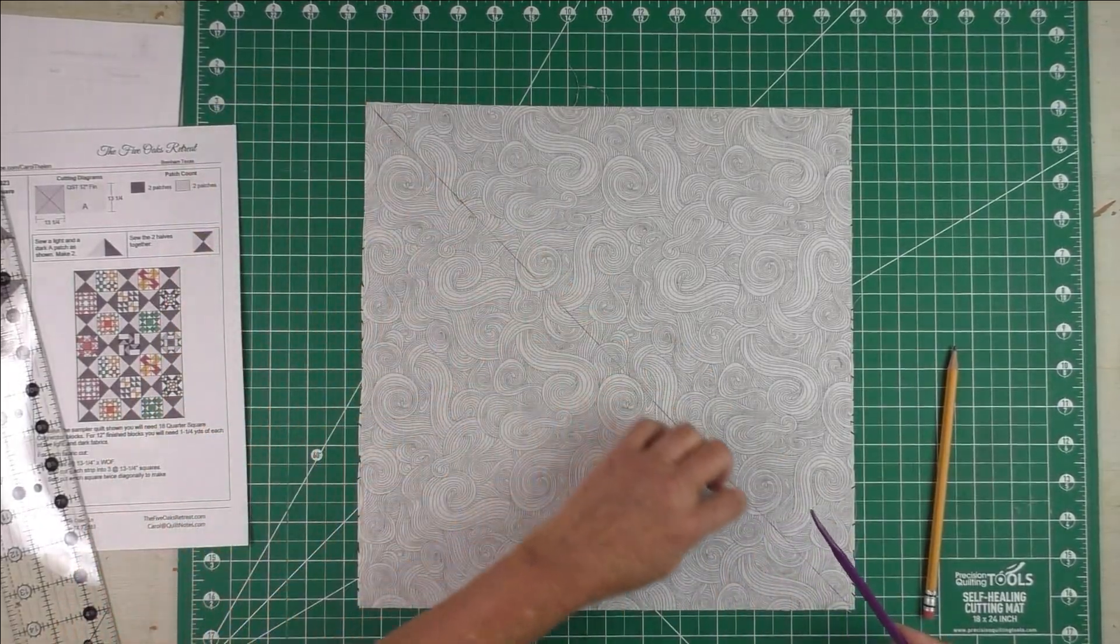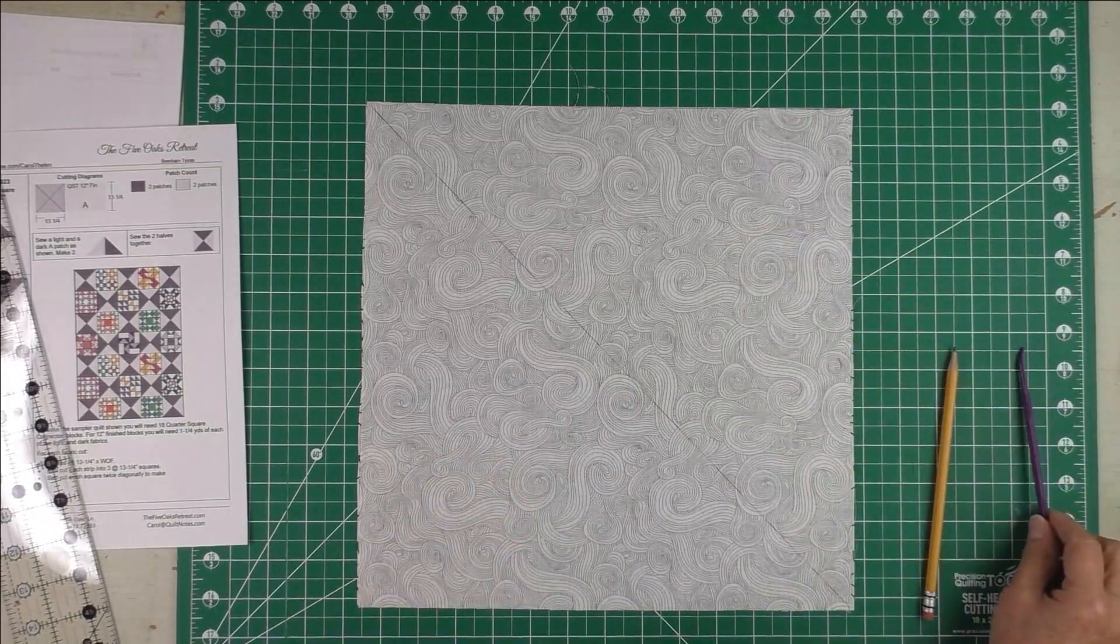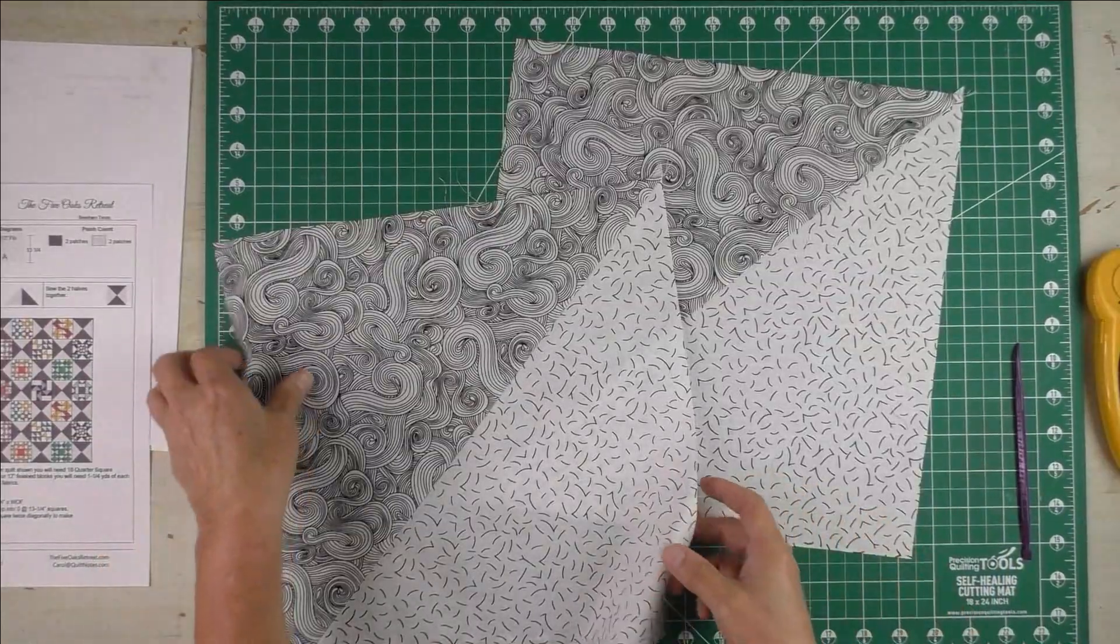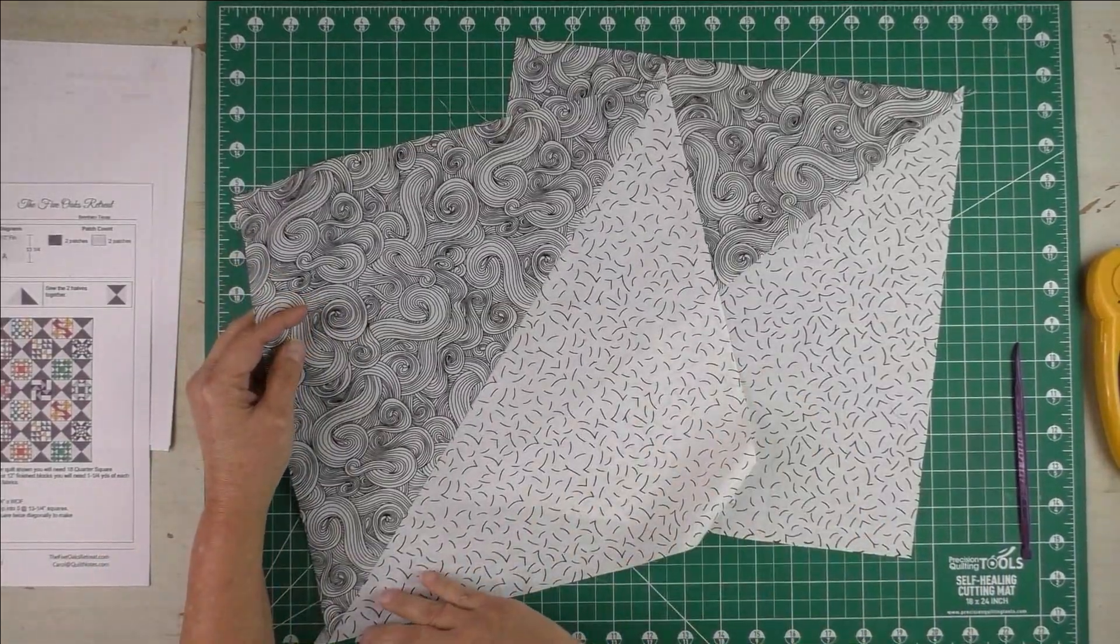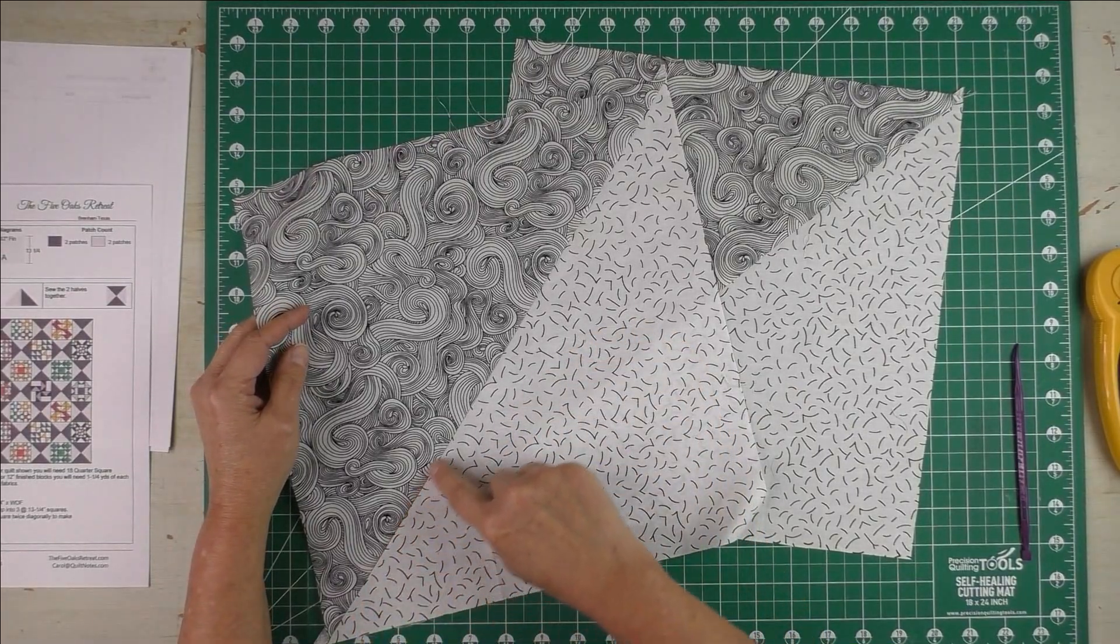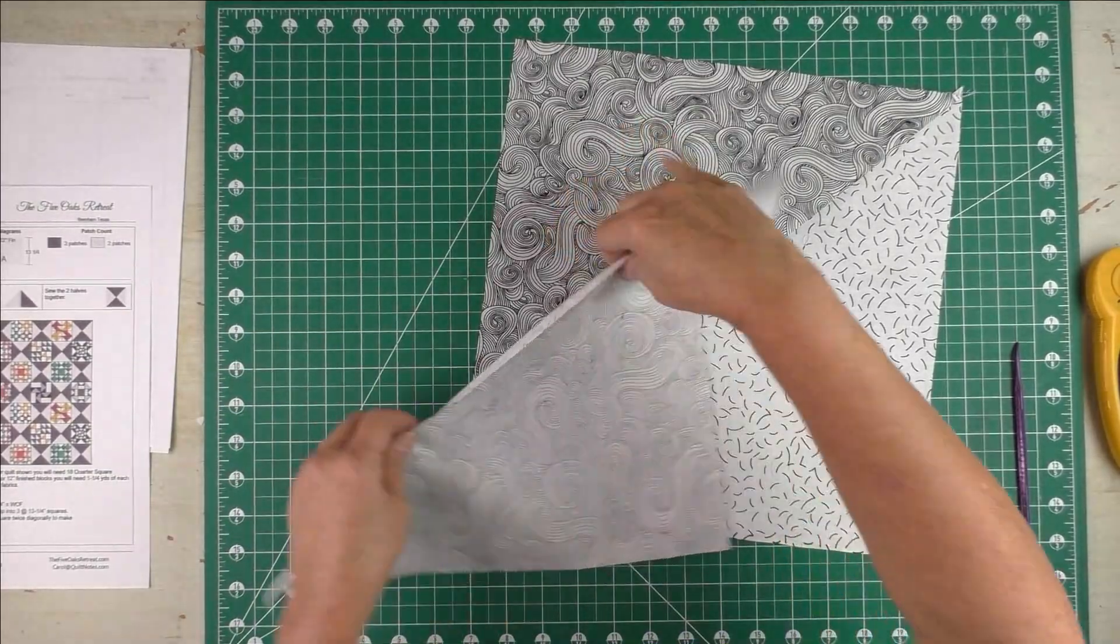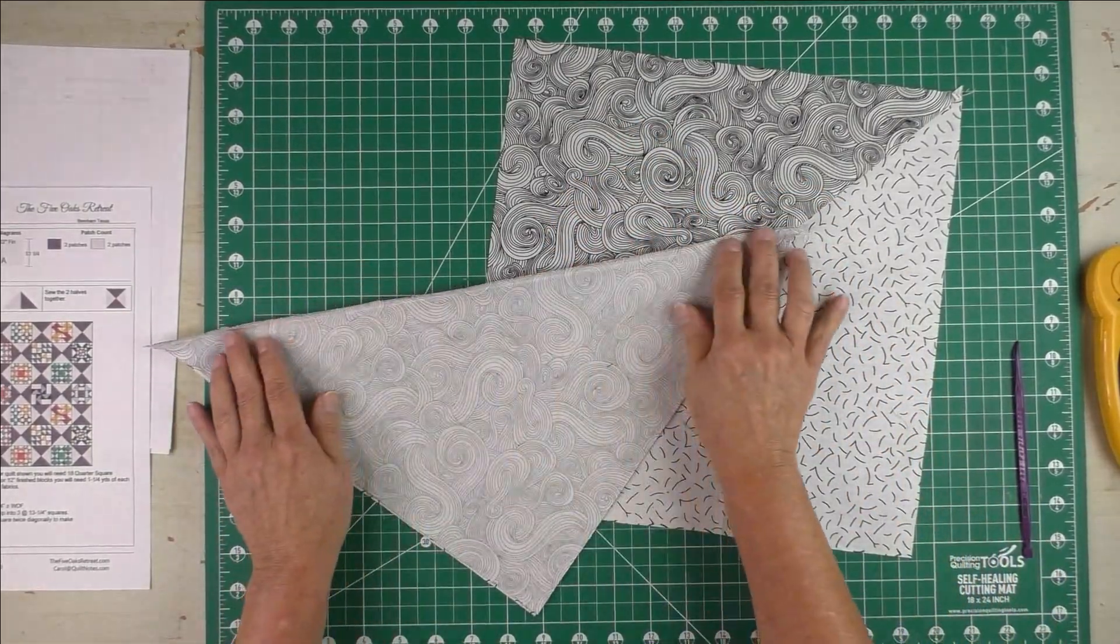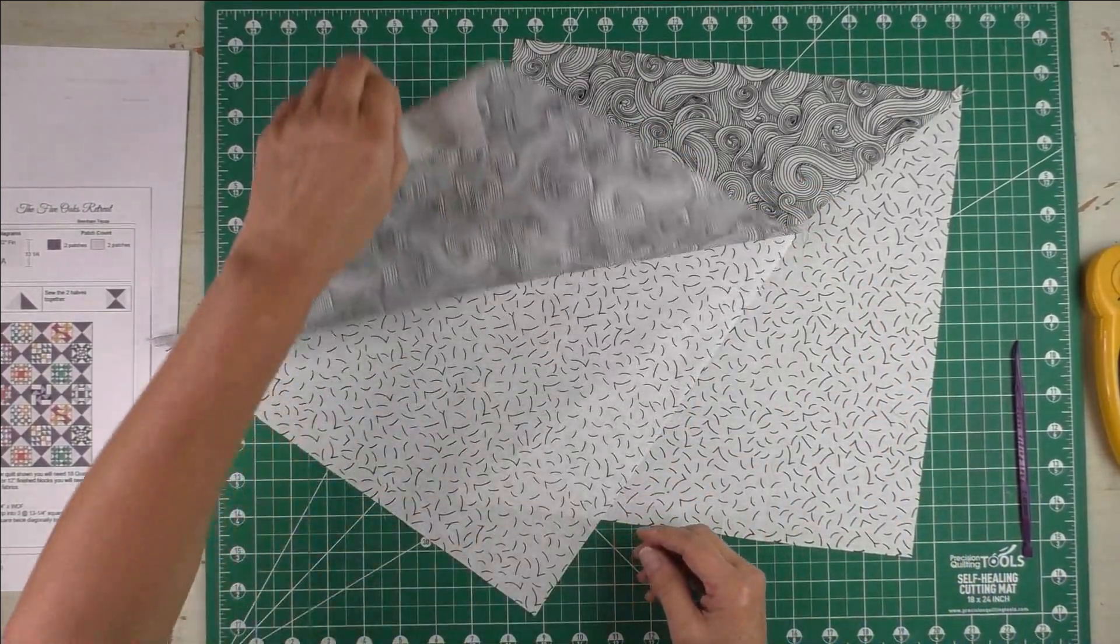Now I've stitched on either side of the diagonal line, and then I cut the pieces apart on the diagonal line like this.